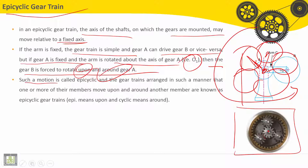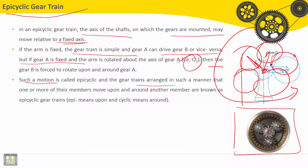Such a motion is called epicyclic, and the gear trains arranged in such a manner that one or more of their members move upon and around another member are known as epicyclic gear trains. Epi means upon and cyclic means around.